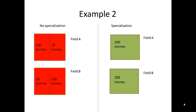For example 2: in field A, 100 tons of wheat can be grown, but for oat only 20 tons can be produced due to conditions. In field B, 20 tons of wheat can be made but 100 tons of oat. If you use the whole area with specialisation, you can make 200 tons of wheat and 200 tons of oat — doubling the output — which is good for the firm as you can sell it for more revenue.